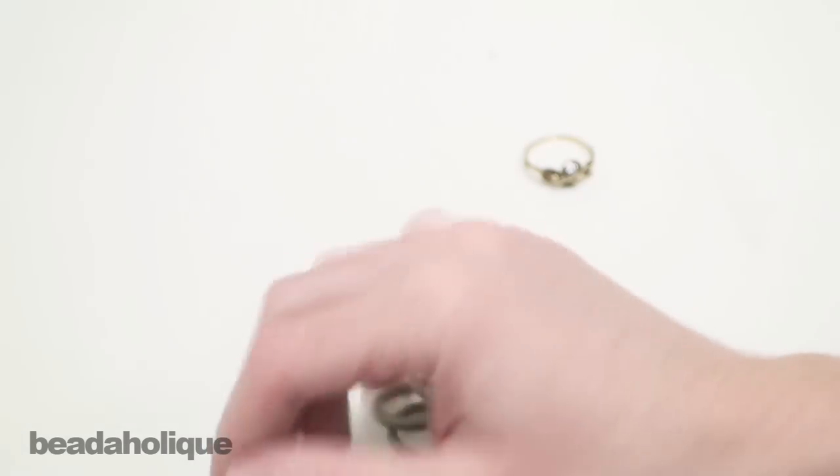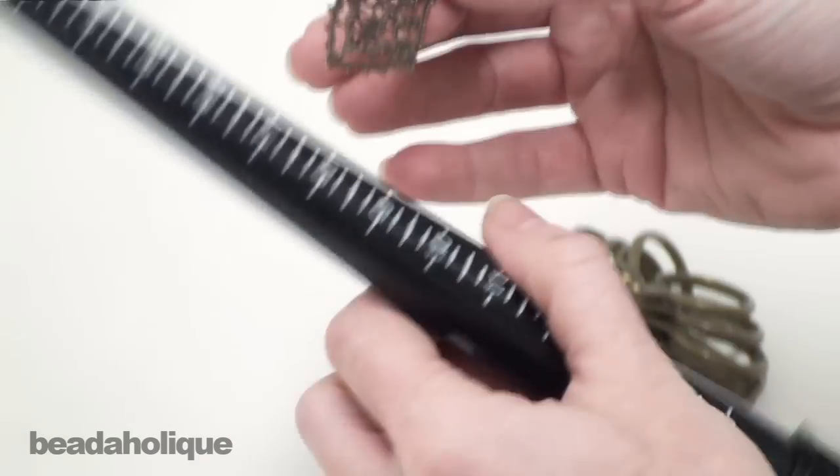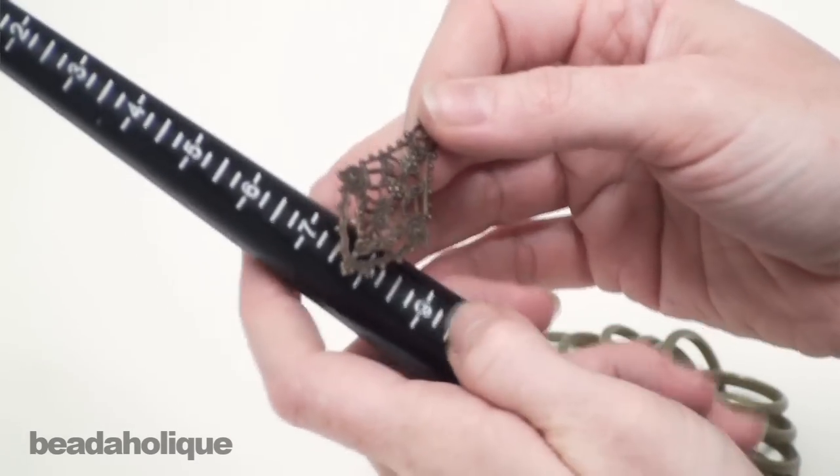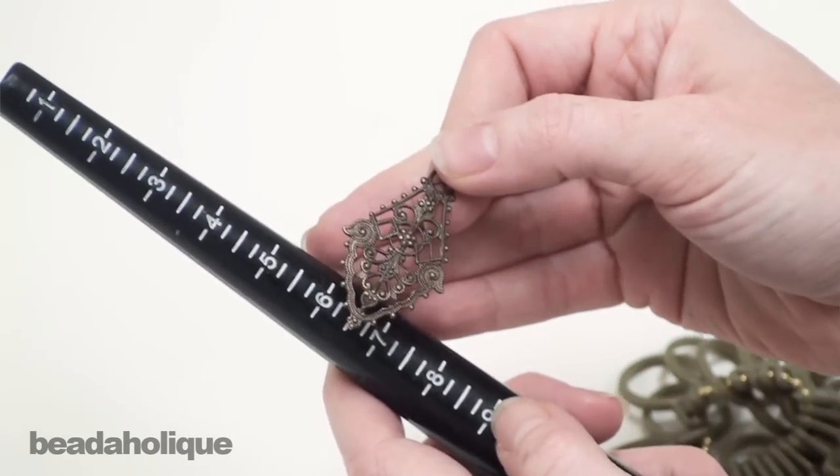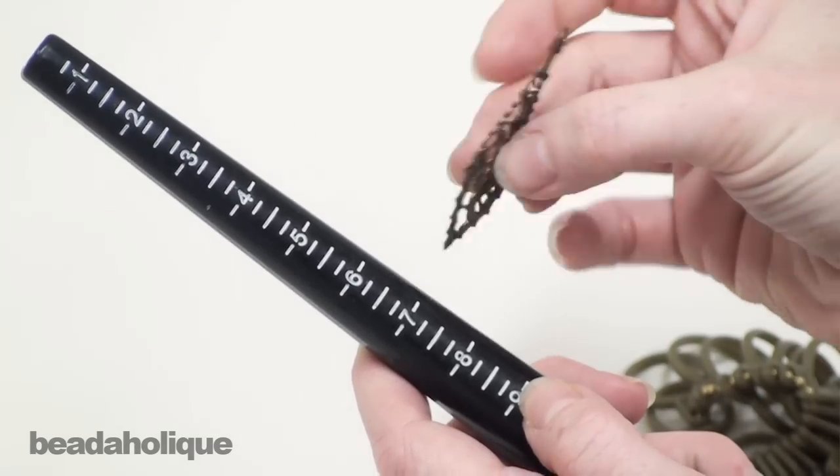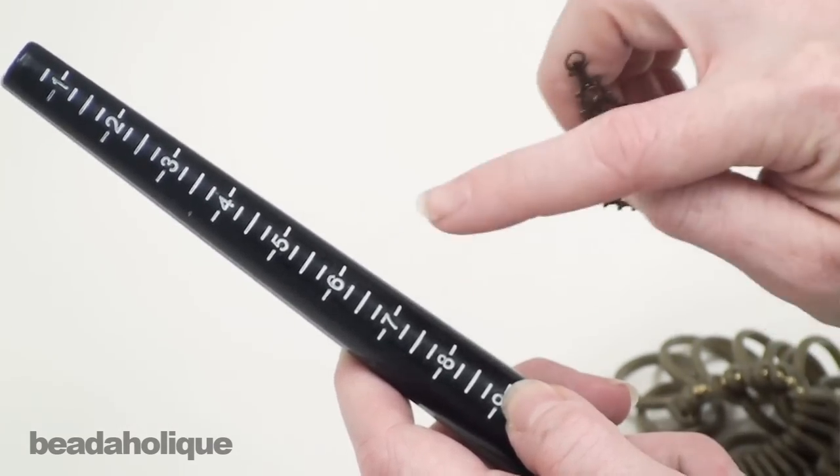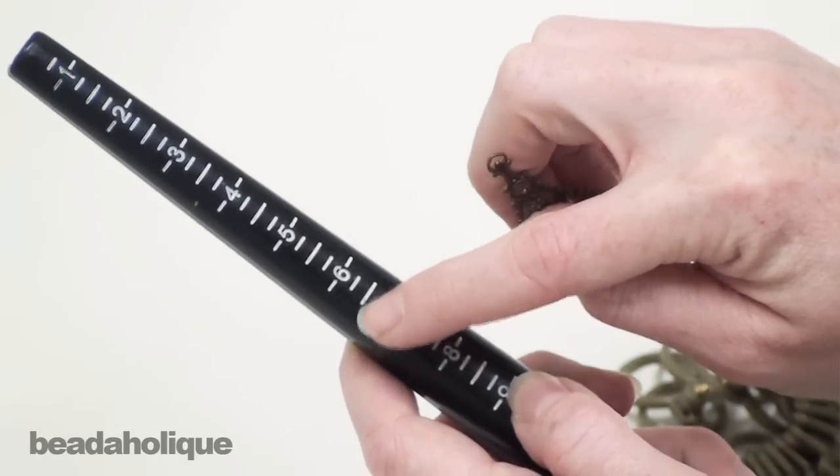So what you want to do is you want to take your filigree. Now if you're wire wrapping you would just take your wire. Because this is going to be a little bit wider of a ring I want to line up the midpoint of the filigree with the midpoint of my six and a half mark.